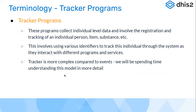Tracker programs collect individual data and involve registration of a person, item, or substance, followed by subsequent follow-ups for that specific tracked entity over time. Since we're dealing with individuals — persons, lab samples, households, or villages — we always need unique identifiers to identify them across programs. A patient could be enrolled in multiple programs such as HIV, TB, and non-communicable diseases, so identifiers like a national ID or health ID are required.